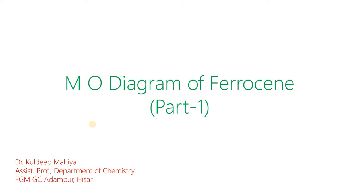Hello everyone. The purpose of this video lecture is to draw the molecular orbital diagram of ferrocene, an organometallic compound, in a very simplified and easy-to-understand way. This video lecture is divided into two parts: Part 1 describing the structure and Part 2 describing the bonding part. We will do it step by step, and it is a good idea to do the practice while watching the video. But before we start, let's pay a little attention to the historical and structural aspect of the molecule.